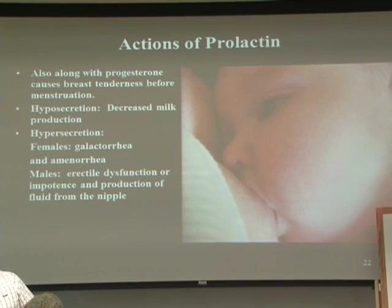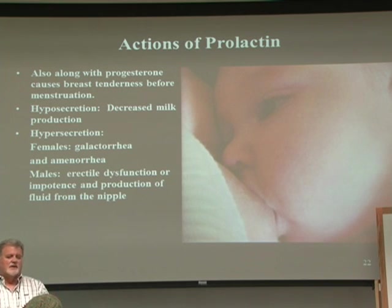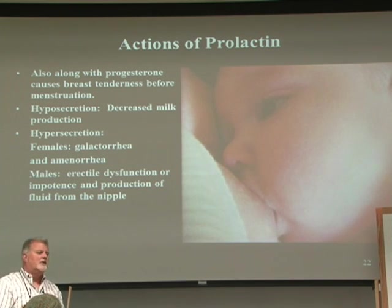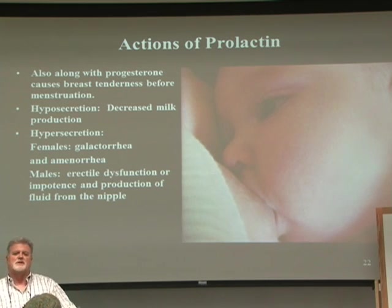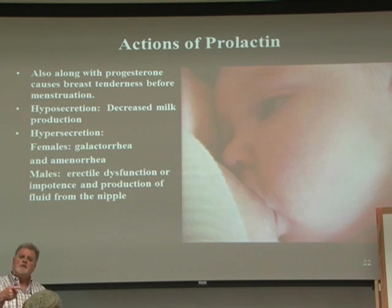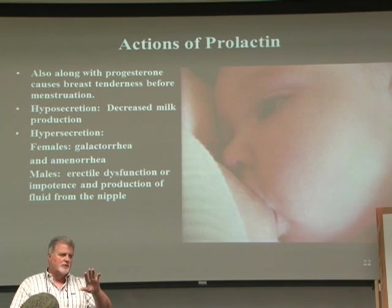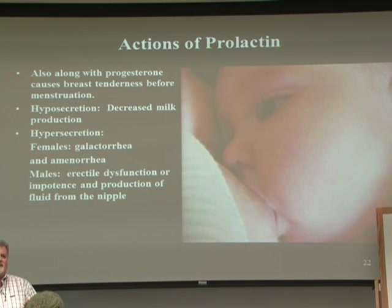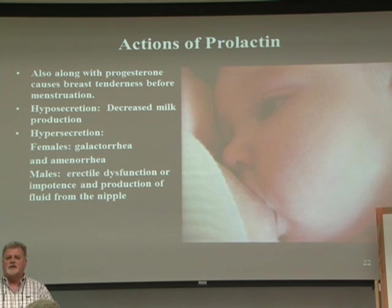With dairy cows, you can keep them producing milk by using automatic milkers that stimulate the nipples, but after about two years their production decreases. You have to keep them pregnant or post-pregnant to maintain milk quality. Regarding breastfeeding duration: the US tends to breastfeed for less than a year, while in underdeveloped countries women breastfeed for much longer — sometimes three to five year olds are still breastfeeding because they don't have enough food energy for the child otherwise.